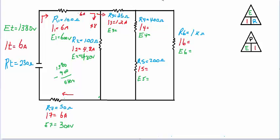Now I can get the voltage at that point using Ohm's Law: E equals I times R. So 1.2 amps times 25 ohms leaves us with a 30-volt drop across resistor 3. I started with 480 volts and just dropped 30 volts here, so that leaves me with 450 volts. From this point to this point, I've got 450 volts.